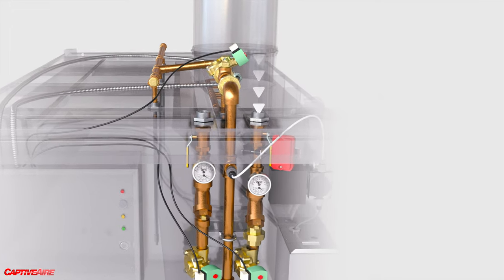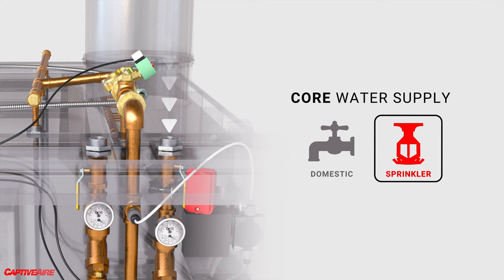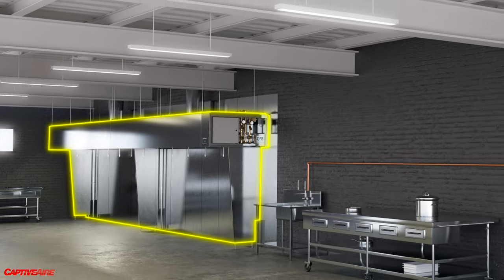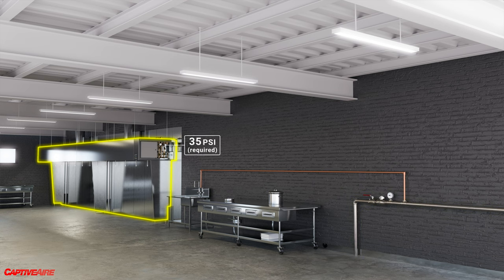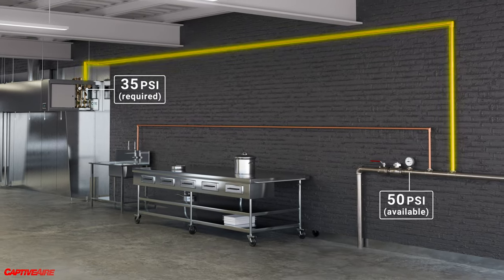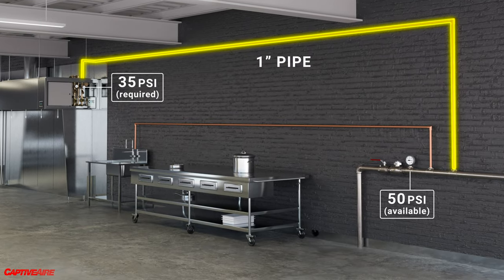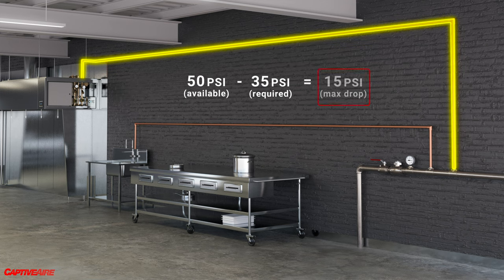The Core water line can be connected to either a domestic water system — your typical water used for sinks, showers, hoses, etc. — or to a building's sprinkler system dedicated for fighting fires. Let's start with a domestic water line example. Say we have a 32-foot hood and a domestic water main showing 50 psi. We know this hood with a 1-inch manifold requires 35 psi at the inlet, so we have 15 psi of allowable pressure drop through the field-installed pipe. To make the connection, we'd use 3 elbows and 30 feet of pipe, and there's a vertical rise of 5 feet.